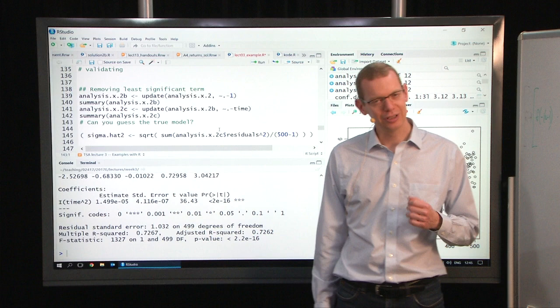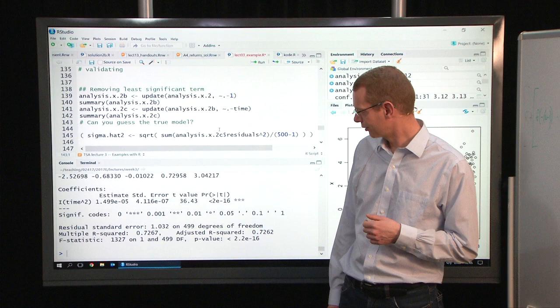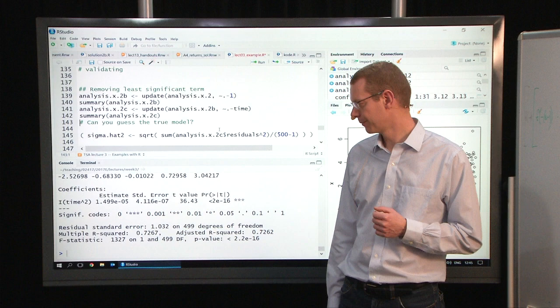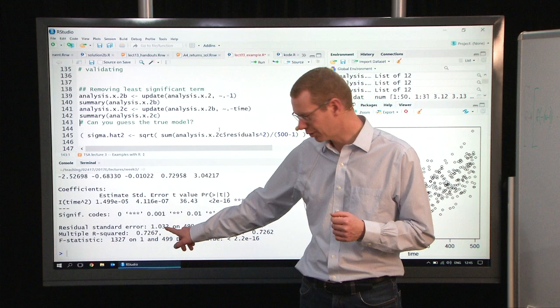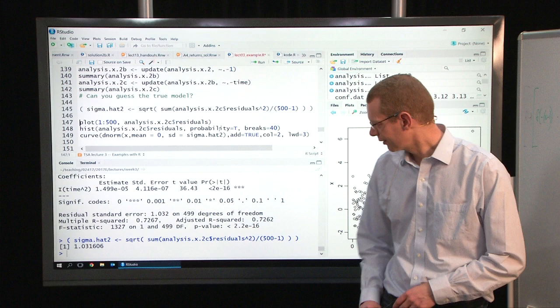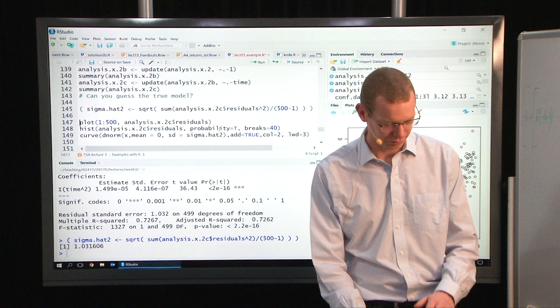If you look at the numbers, also the residual standard error here, the question is, can you actually guess which model was used to simulate the data? Because I can confess that the data was simulated. This is very close to 1.5 and this is very close to 1, which were the true values. Let's get an estimate by ourselves of the sigma, the same expression just copied down from before using just a different one.